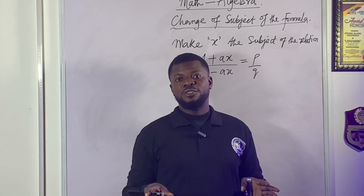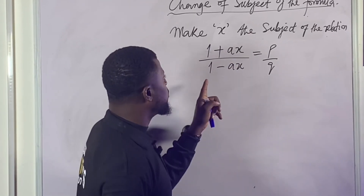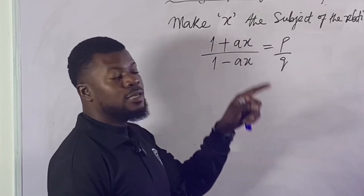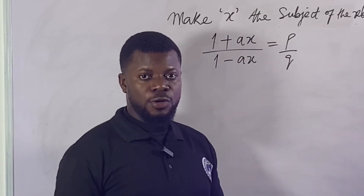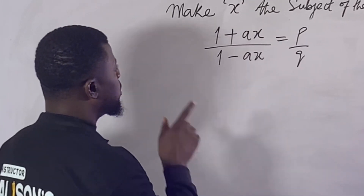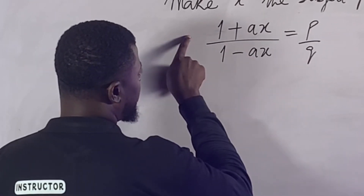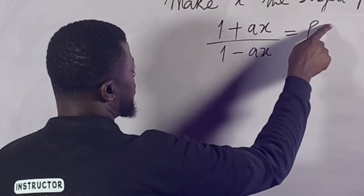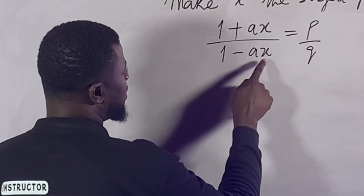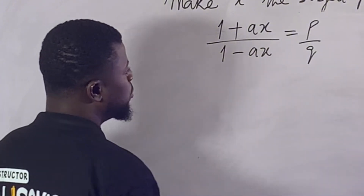Hello smart people, here is the celebrity instructor Alison. In this smart video tutorial, I want to show you how to make x a subject of the relation. So to keep that simple, you cross-multiply this. We're having 1 plus ax over 1 minus ax equal to p over q.